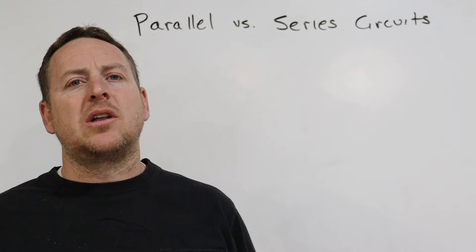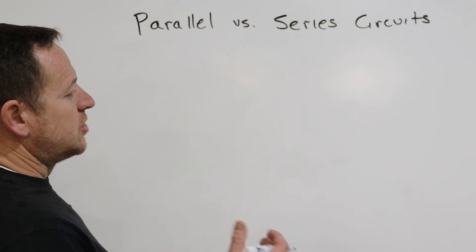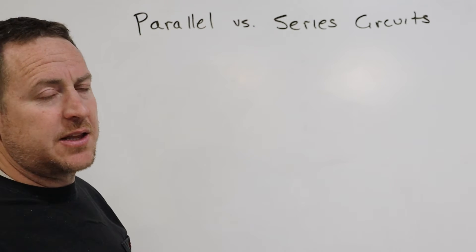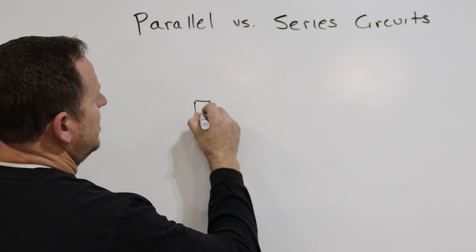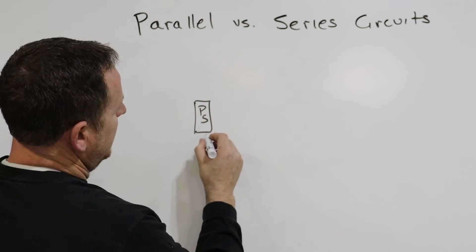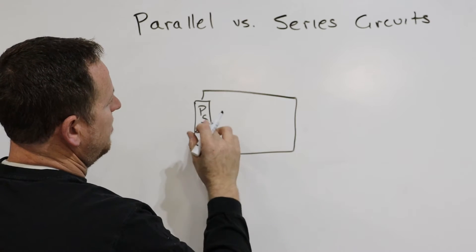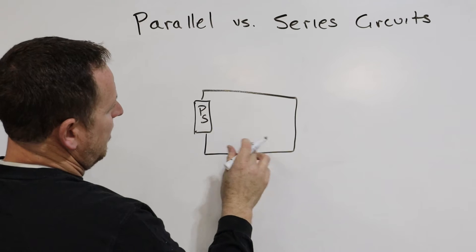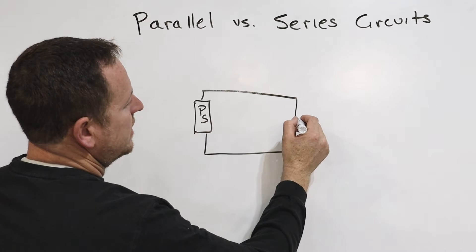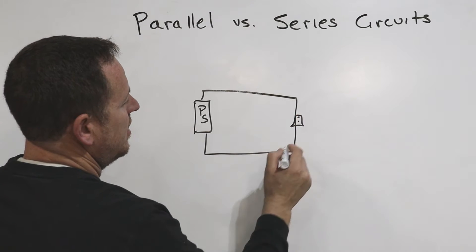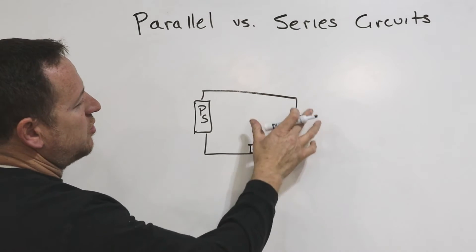When you're dealing with alternating current in your home circuits, it's always wired in parallel. To begin, a circuit is nothing more than a closed loop. You'll have your power source, then you'll have a wire that makes it all the way around back to the power source, and then you'll have some sort of device — whether it's an outlet or a switch.